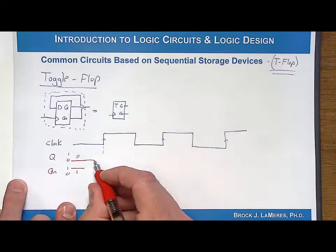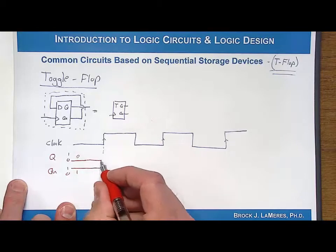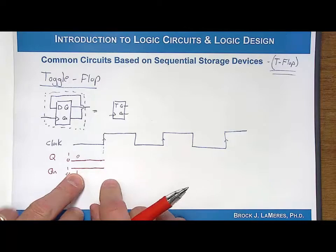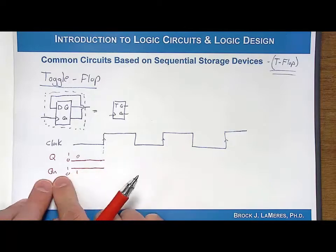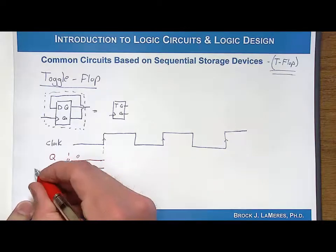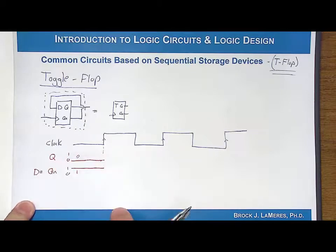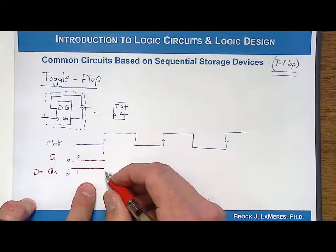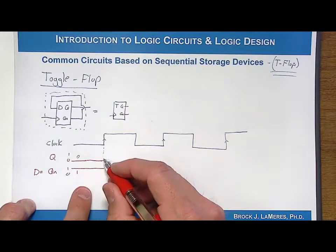So what we're interested in is what happens at the triggering clock edge? We come along and we are going to update Q with the new value, or whatever value is on D. However, D is wired to Q naught. So D is equal to QN.